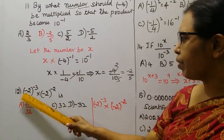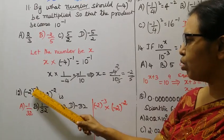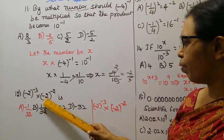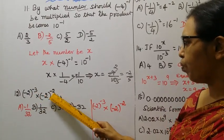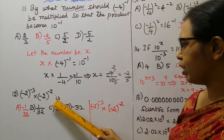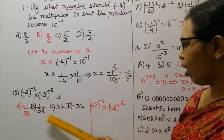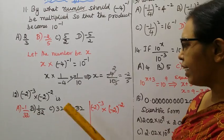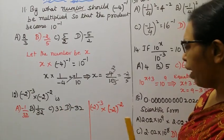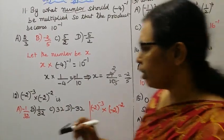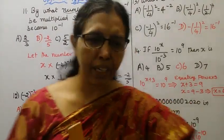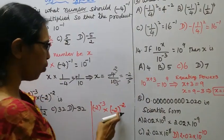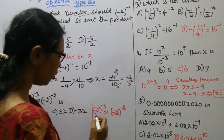12th sum: (-2) the whole power minus 3 into (-2) the whole power minus 2. Which option is correct? Generally, (-2) the whole power minus 3 into (-2) the whole power minus 2.